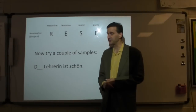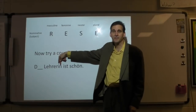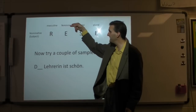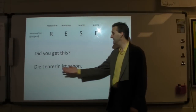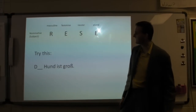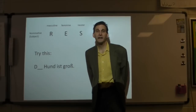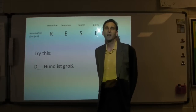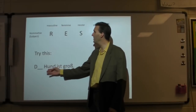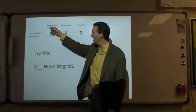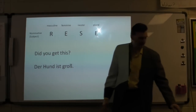Let's try a couple of samples. If we have Lehrerin — I'm sure you know that anything ending with I-N makes it female — well, that makes it very easy. It's feminine, there's our E, therefore die. Die Lehrerin ist schön. How about Hund? Do you know the gender of Hund? The gender of the word Hund is masculine. We need that R then, so der Hund ist groß.